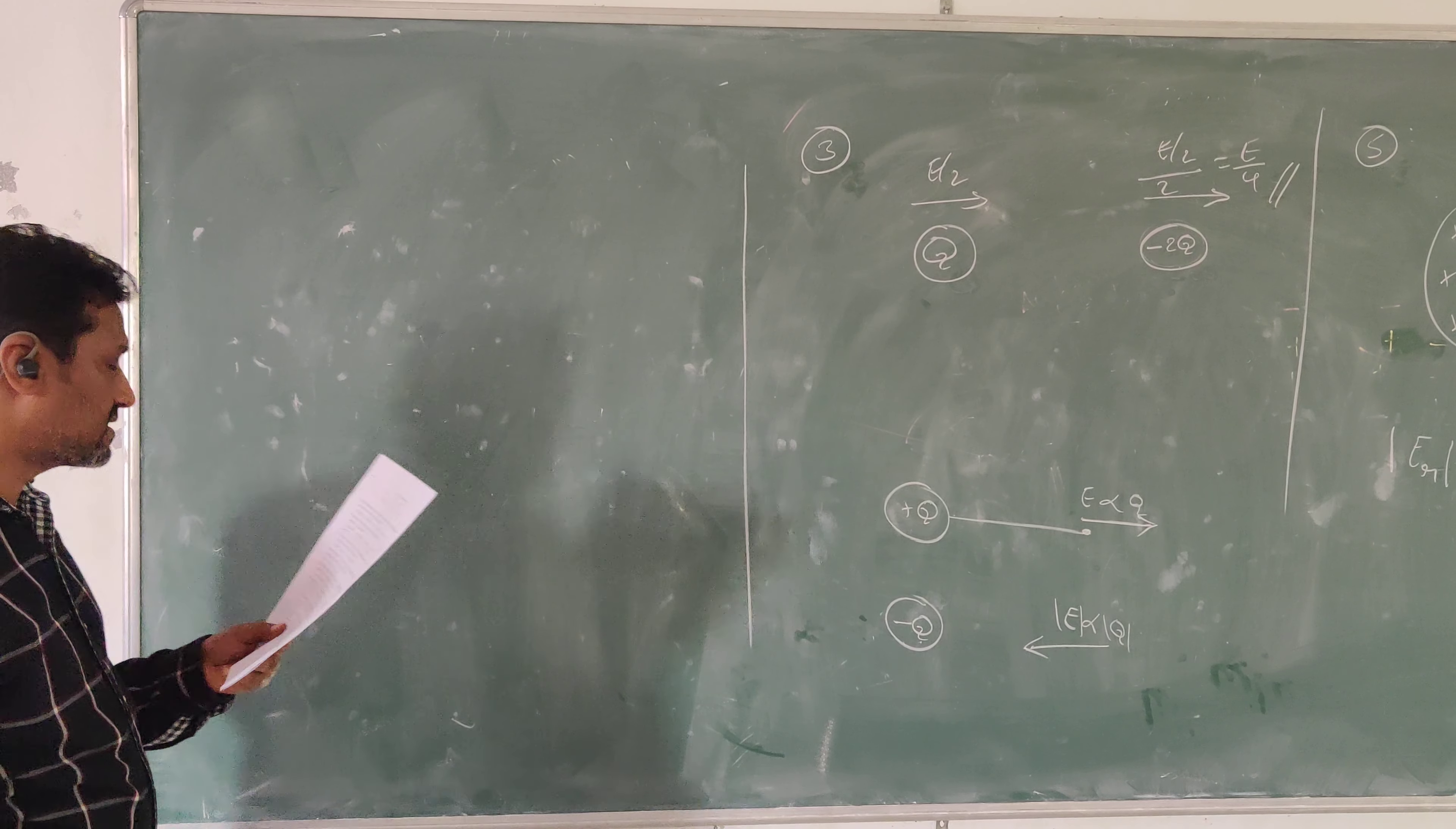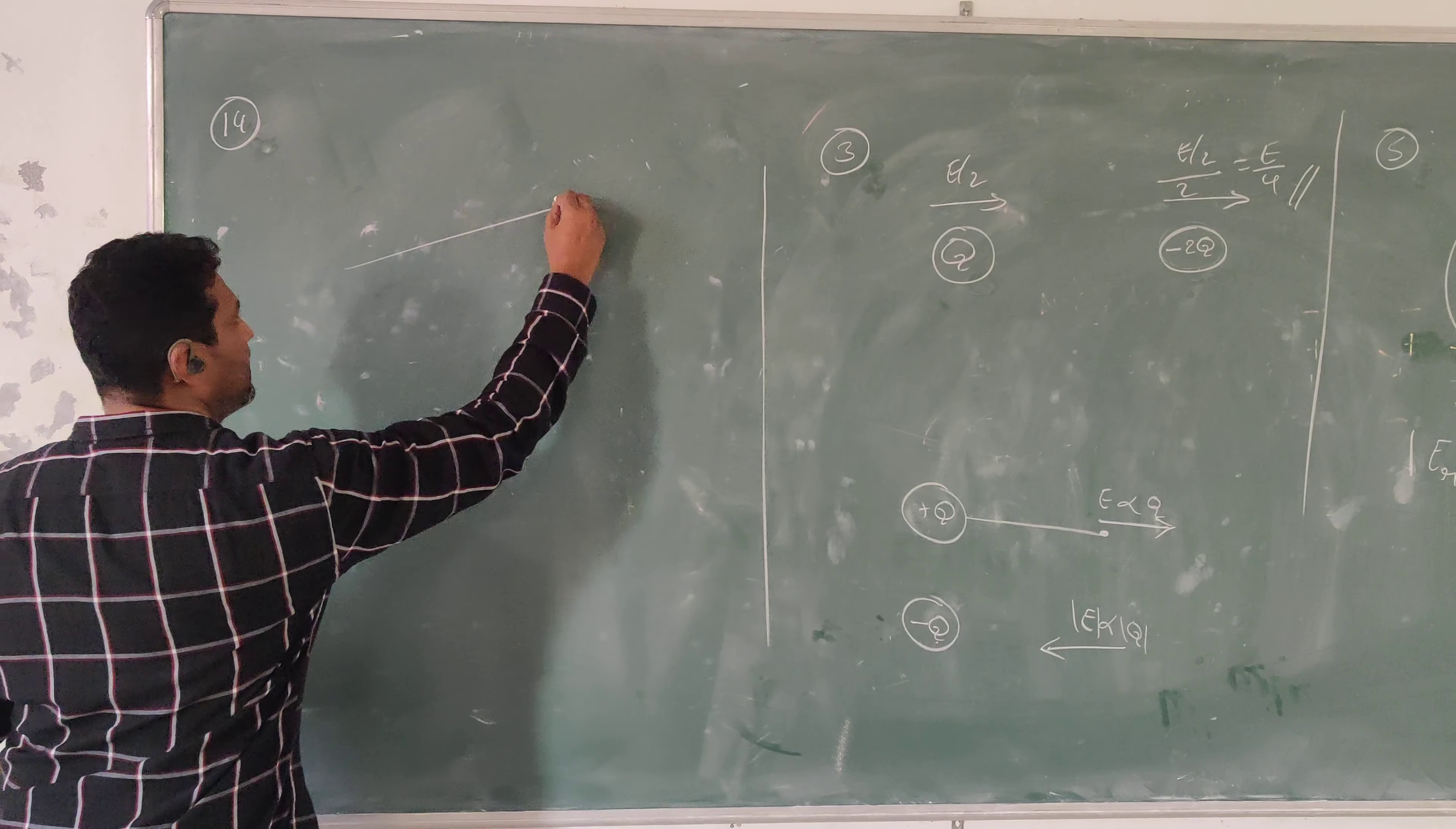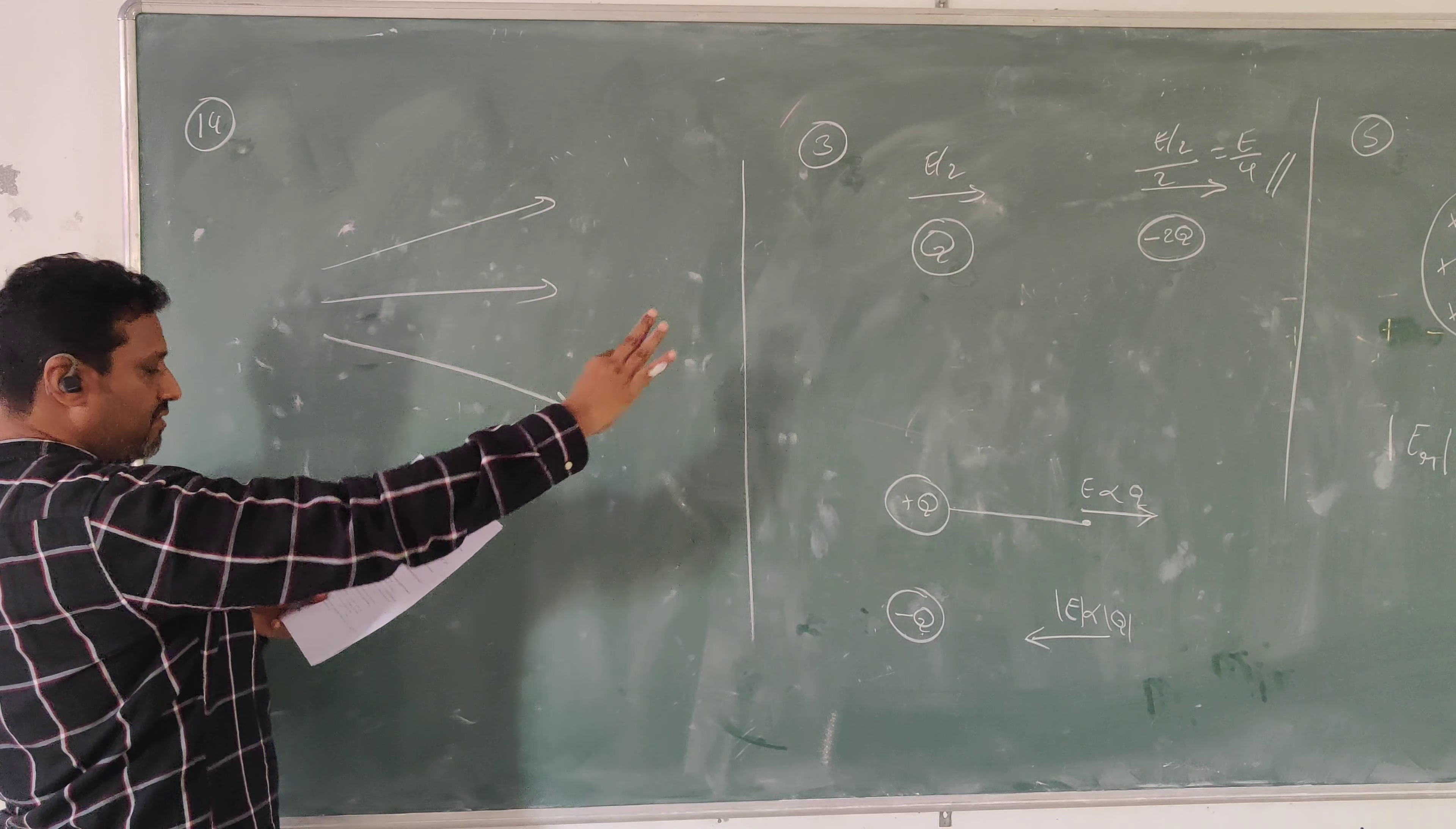The next most difficult question we will discuss here is question number 14. There is some electric field that is given like this. From this we can understand that the field is non-uniform.